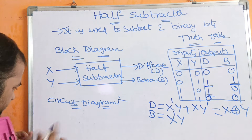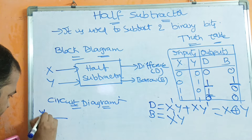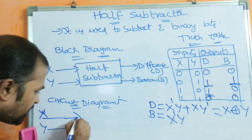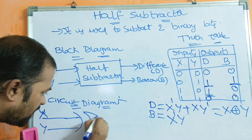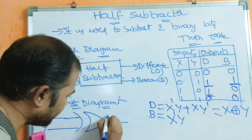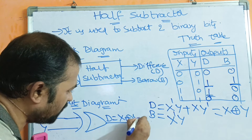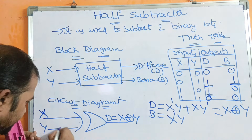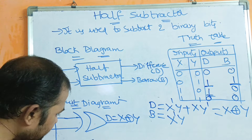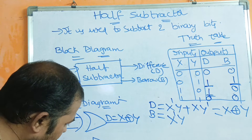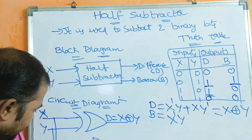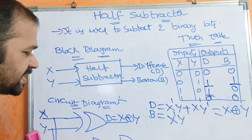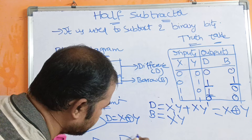So we have two input bits: X and Y. The formula for Difference is X XOR Y, so we use an XOR gate with inputs X and Y to produce Difference. For the Borrow, the formula is X-bar·Y. X-bar means we perform a NOT gate on X to give X-bar as output. Then X-bar and Y are passed to an AND gate, because the AND gate performs the product operation, giving Borrow as output.